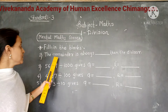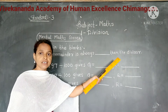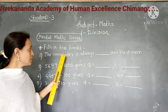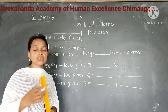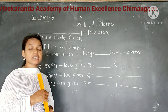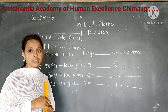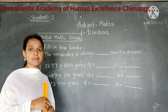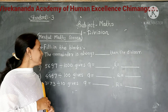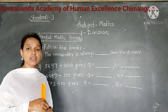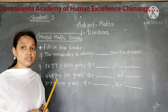Next question: the remainder is always blank than the divisor. We have seen the remainder is always smaller than the divisor. We have solved so many examples and we know that the remainder is always smaller than the divisor. So here our answer is 'smaller'.